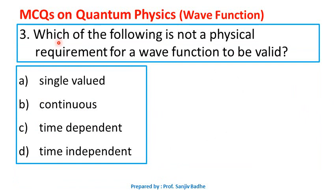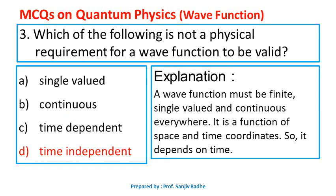Question number three. Which of the following is not a physical requirement for a wave function to be valid? Options are: single-valued, continuous, time-dependent, and time-independent. A wave function must be finite, single-valued, and continuous everywhere — these are the requirements of the wave function. And since the wave function is a function of space and time coordinates, it depends on time also. So, which is not a physical requirement? Time-independent. The wave function is not time-independent.